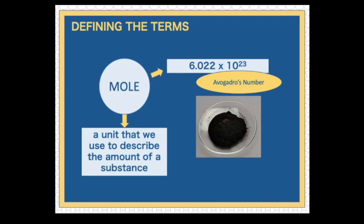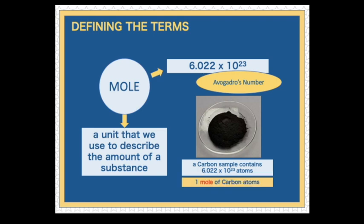To give you an idea how one mole of an element looks like, here is a sample of one mole of carbon. Since this is one mole of carbon, we can say that there are 6.022 times 10 raised to the 23rd power of carbon atoms in this sample.